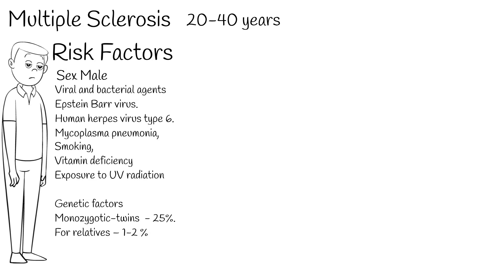Genetic factors represent an additional risk factor. The risk rate in monozygotic twins, who share 100% genetic similarity, is approximately 25%. For other relatives, the risk is 1–2%.